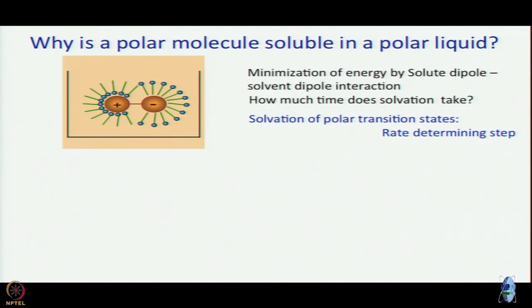The question asked in solvation dynamics is: how much time does it take for solvation to take place? This is fundamentally interesting because solvation of polar transition states — transition states are polar more often than not — is often the rate-determining step. We saw an example of such a polar transition state in the case of DMABN in the last module. So if you know solvation dynamics, in principle you should be able to tell how much time a reaction takes. This is a very important step in understanding reactions that take place in solutions.